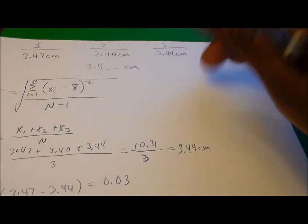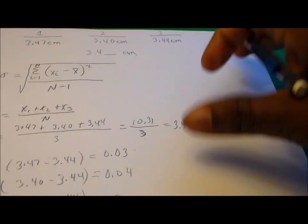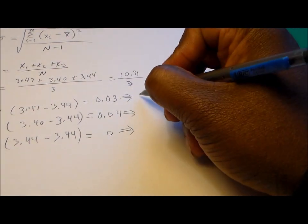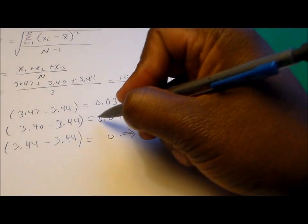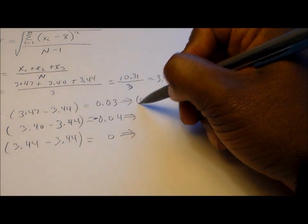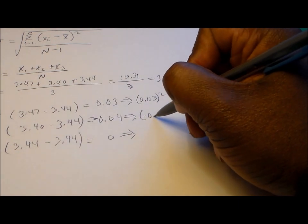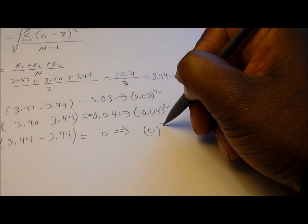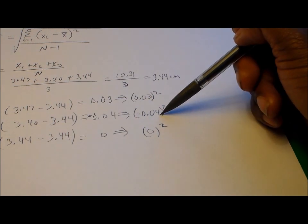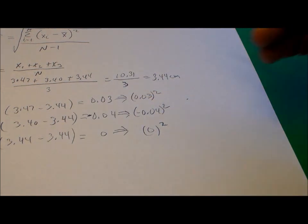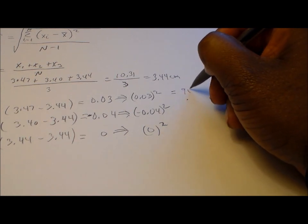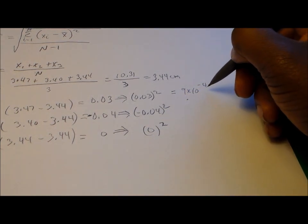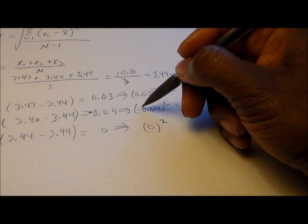Now we need to square those differences. So that's 0.03 squared — and that first one should actually be negative 0.03 — then negative 0.04 squared, and 0 squared. With one significant figure, 0.03 squared gives us 9 times 10 to the minus fourth.